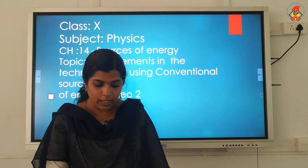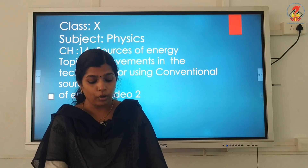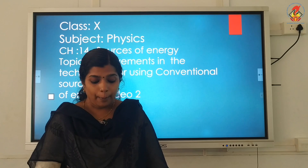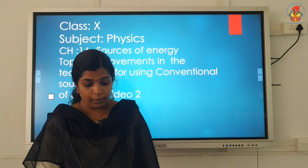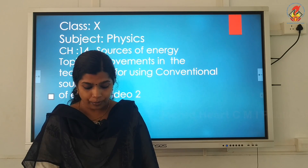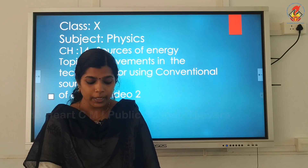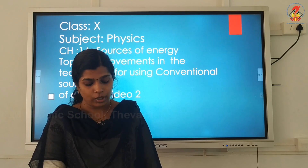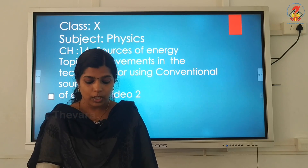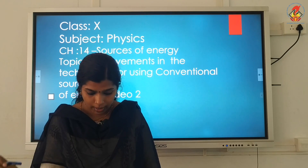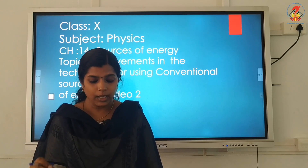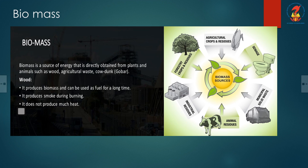Technological advancement has also enabled us to convert animal dung into a more efficient fuel called biogas. Biogas is obtained by anaerobic fermentation of animal dung in the presence of water, and is produced in a plant called a biogas plant or gobar gas plant. Biogas is a mixture of methane, carbon dioxide, hydrogen, and traces of hydrogen sulfide. The main component of biogas is methane, which makes up to 75% of its volume. Methane is an extremely good fuel.